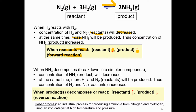In a forward reaction, reactants react to produce product. However, when this is a reversible reaction, the forward and backward reactions occur simultaneously. When ammonia decomposes or breaks down into simpler compounds, the concentration of product decreases. At the same time, more hydrogen and nitrogen are produced, so their concentration increases. Therefore when product decomposes, reactant increases and product decreases — this means it favors the reverse reaction.